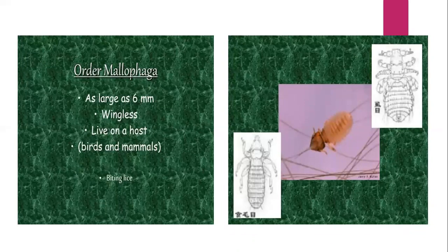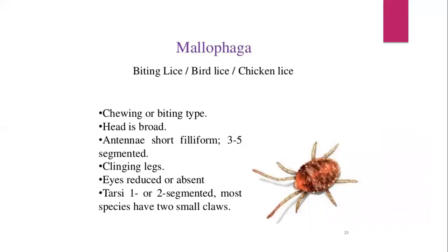Mallophaga — these insects are as large as six millimeters. They are wingless creatures that especially live on hosts, particularly birds and mammals. Mallophaga consists of about 3,000 species and act as external parasites that feed mainly on birds. That is why they are called biting lice, bird lice, chewing lice, or chicken lice.